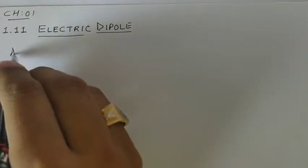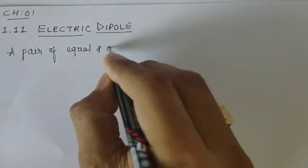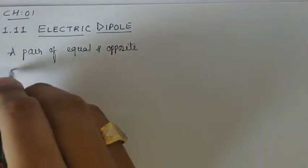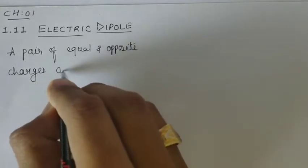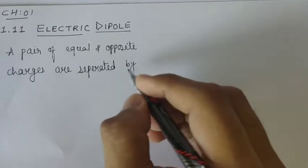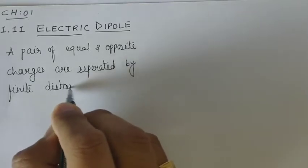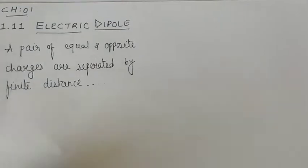Hello students. Chapter 1, section 1.11: Electric Dipole. What is electric dipole? 'Di' means two, 'pole' means polarity. Electric dipole means a pair of equal and opposite charges separated by a finite distance is called an electric dipole.